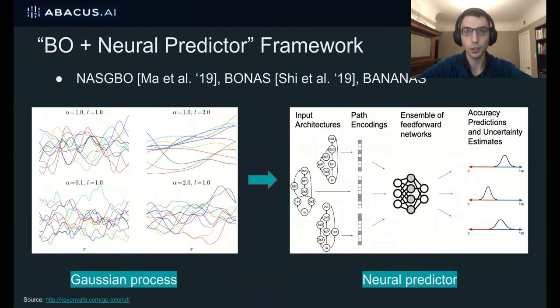Then in 2019, a few papers proposed a new paradigm all around the same time, by replacing the Gaussian process with a neural network. And this alleviates both problems from the previous slide. With the neural network, there are no scalability issues, and there's also no need to hand design a distance function. We can just pass an encoding of each architecture directly to the neural network as input.